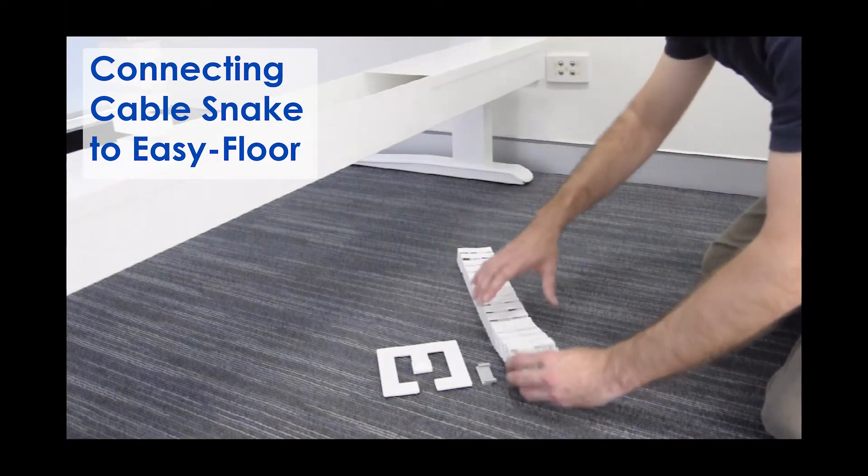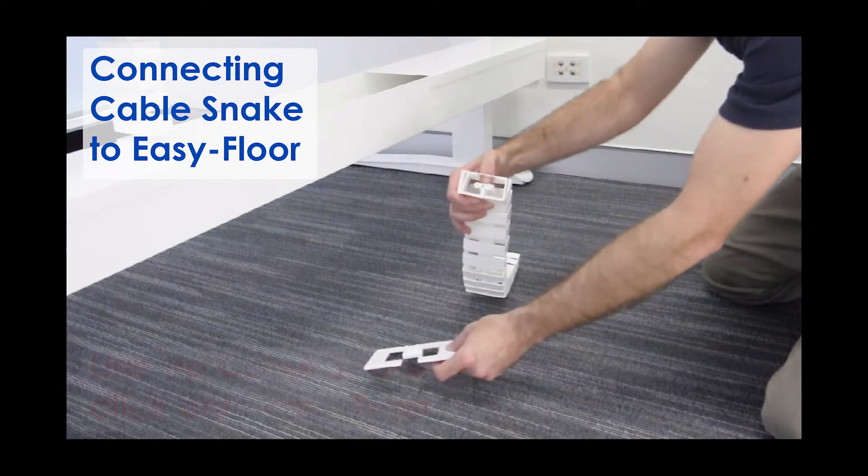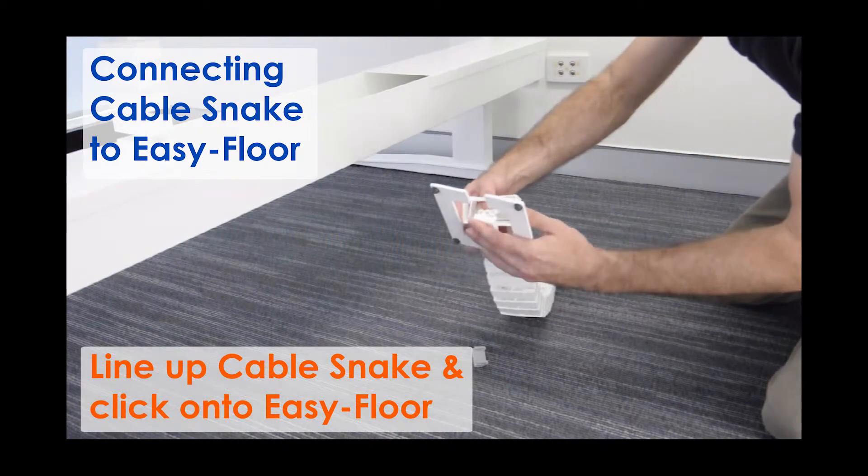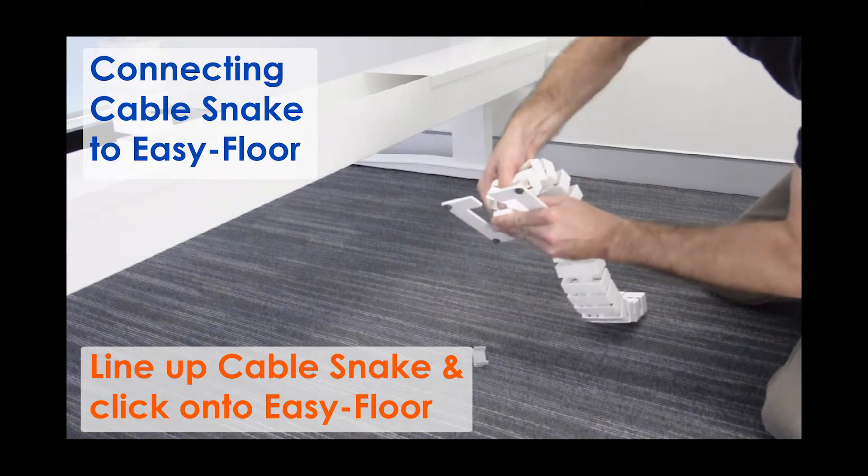Installation begins with connecting the Cablesnake to the EasyFloor. For connection, line up the Cablesnake and click onto the EasyFloor.